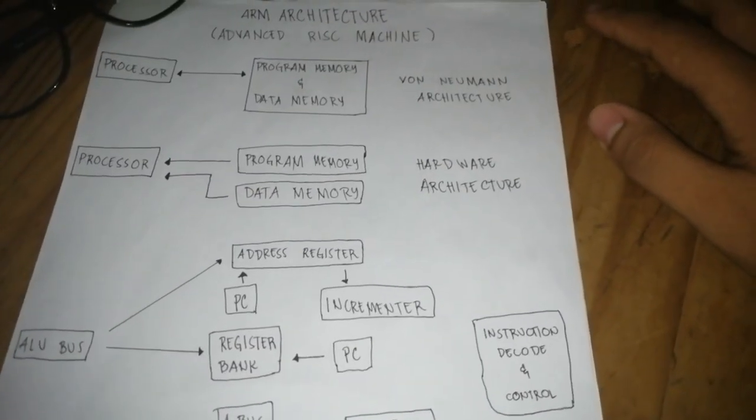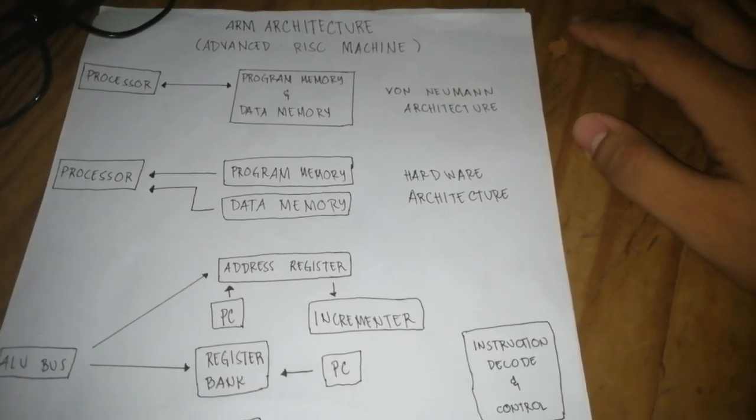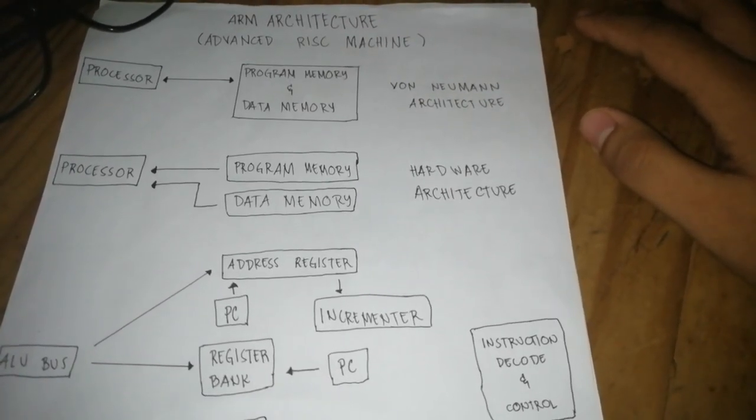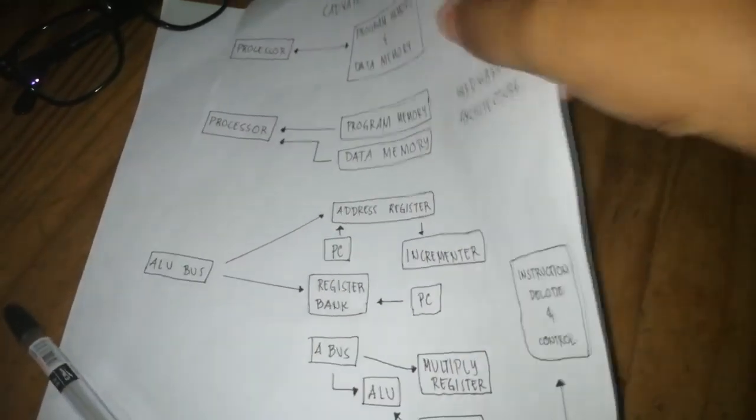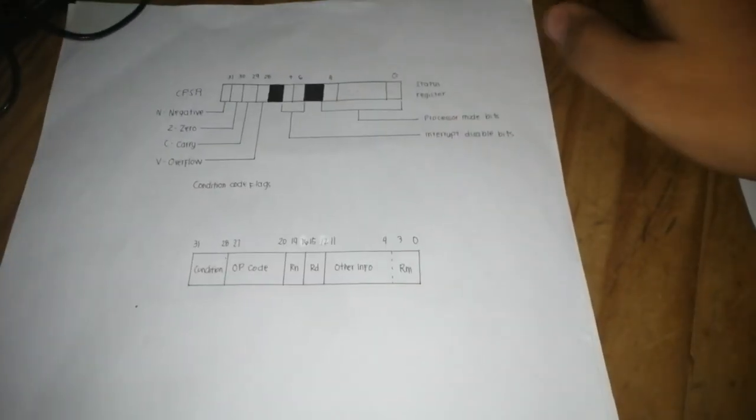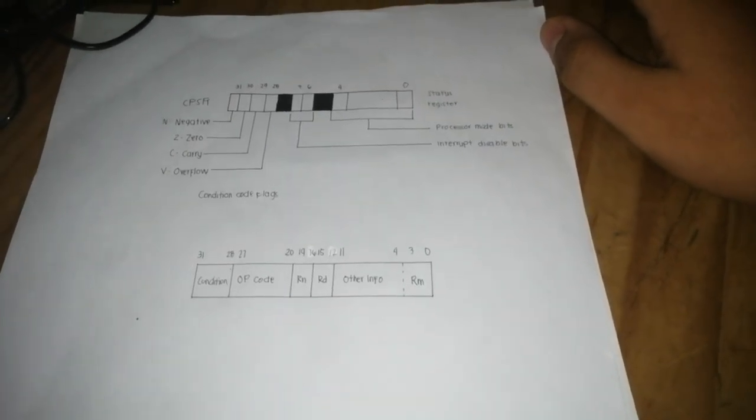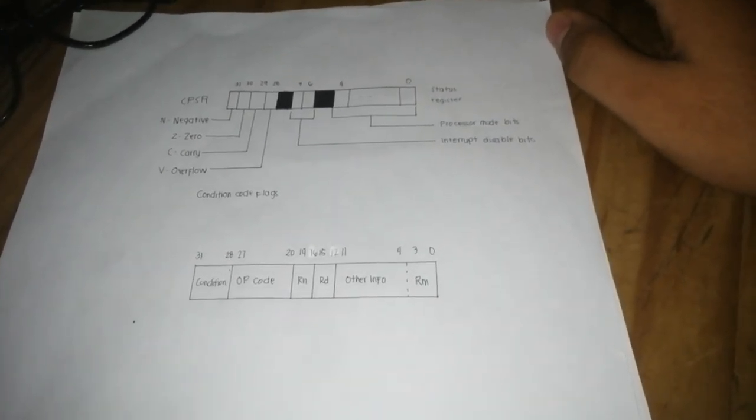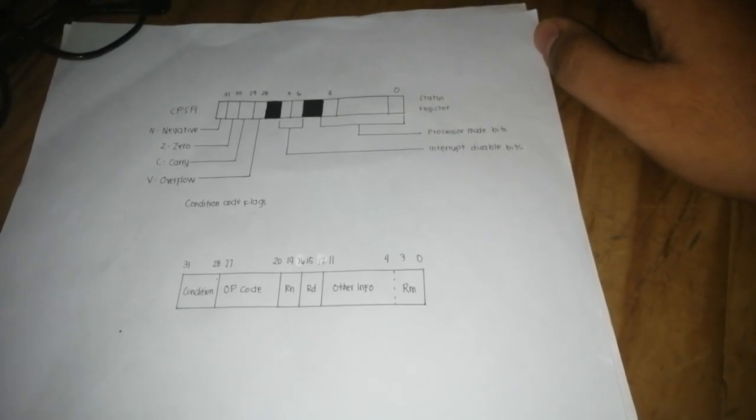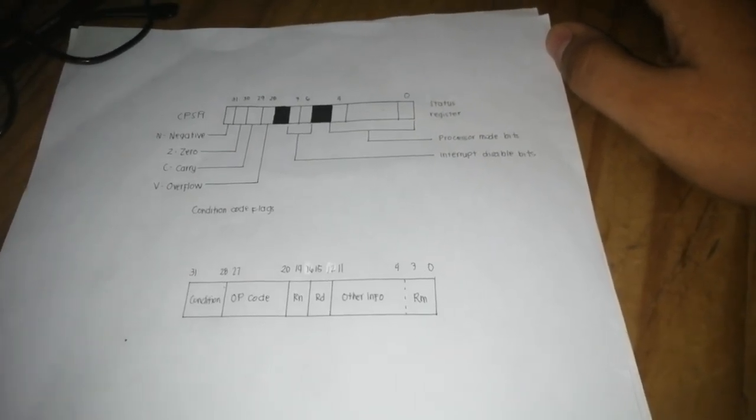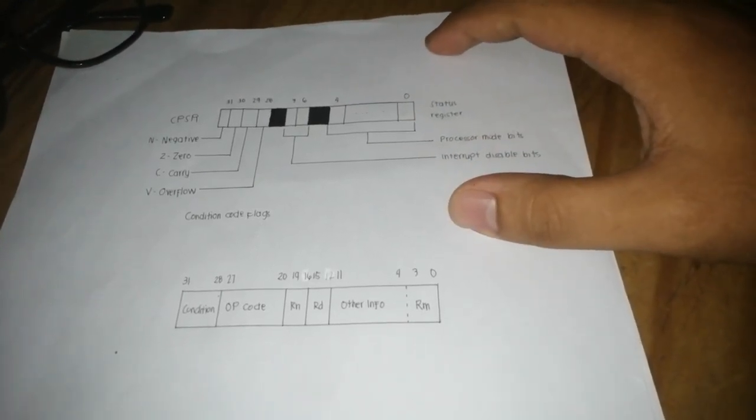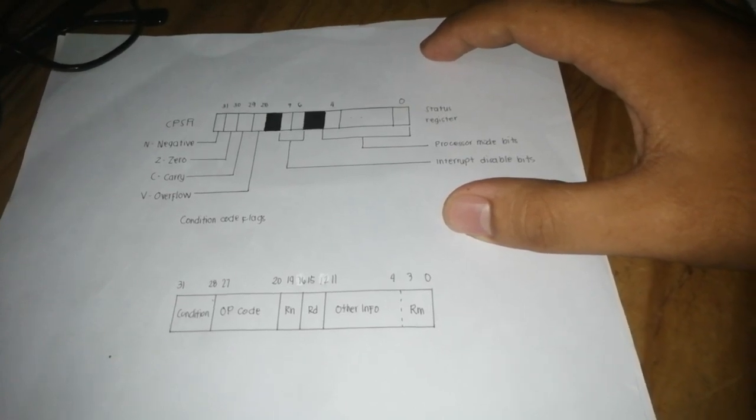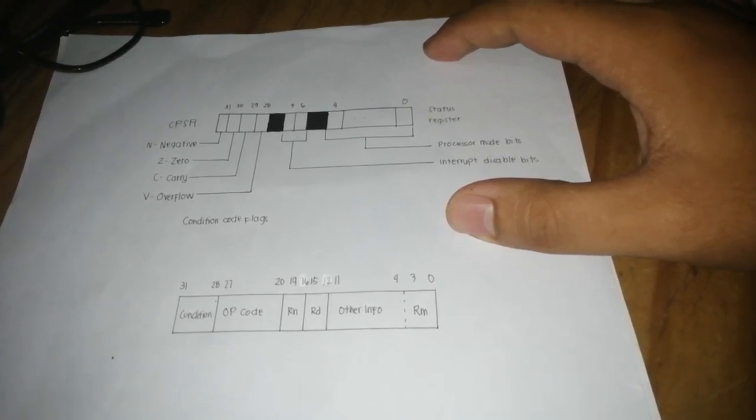So next we will talk about the subtopic of ARM architecture, which is the register structure. Here in register structure there are 16 32-bit, you'll see here a condition code flags, processor mode bits, and interrupt disabled bits. This is a diagram where you see a status register and CPSR.